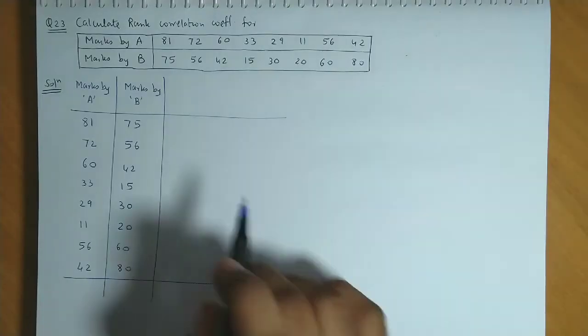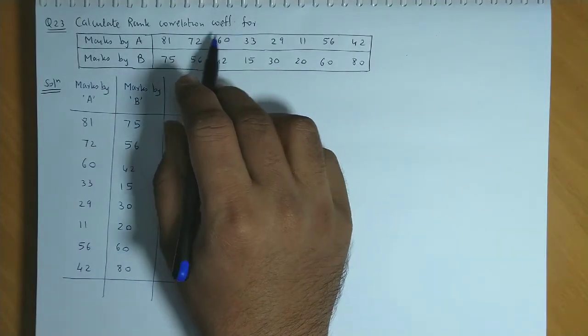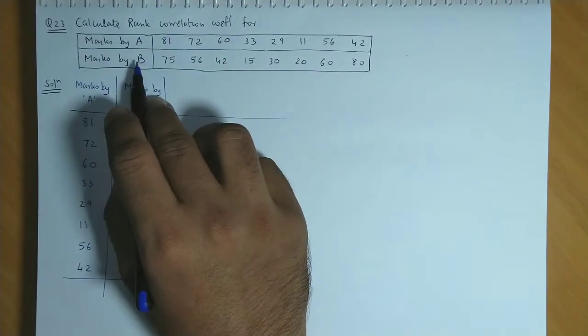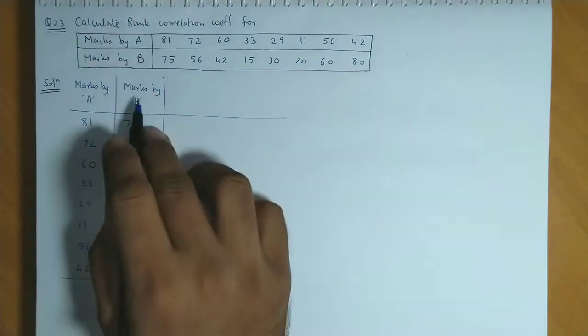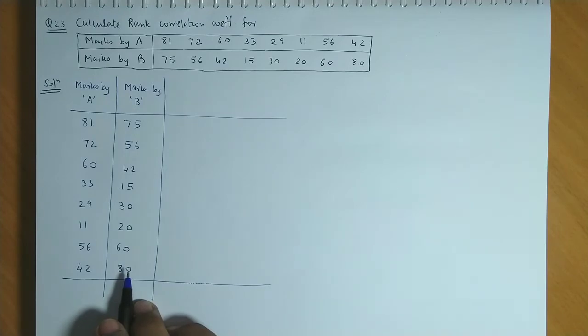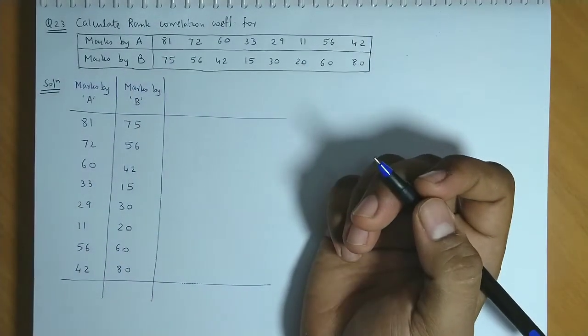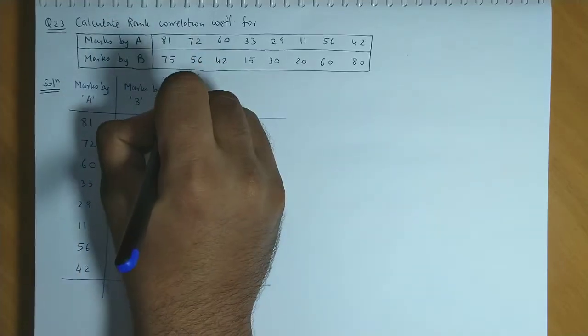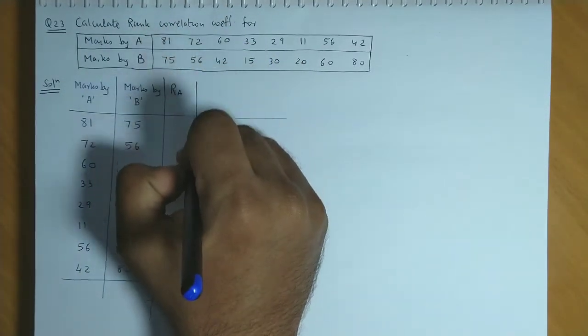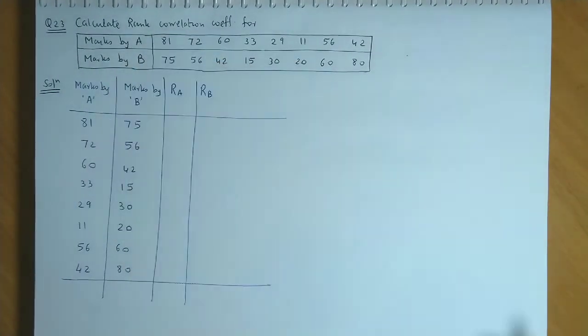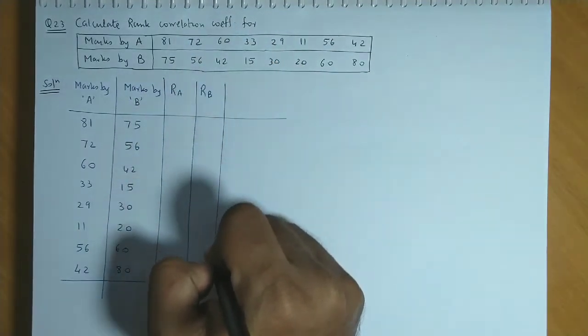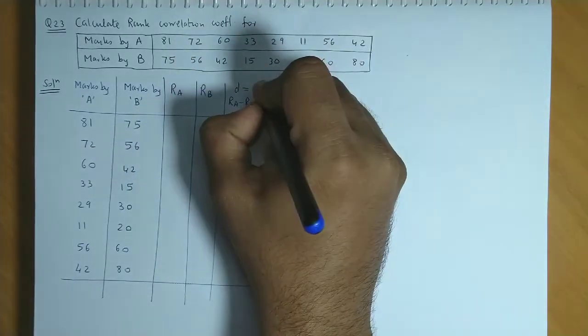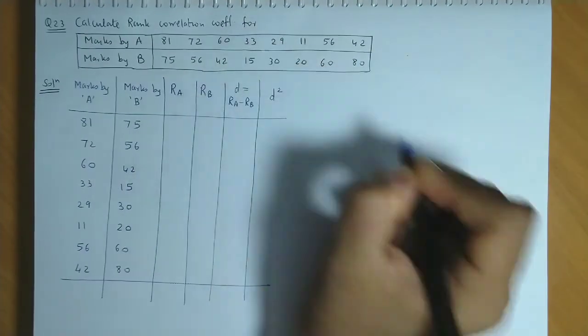Now let's take a question related to rank correlation coefficient. Here marks by A and marks by B are mentioned, but remember in the rank correlation we don't have the marks, we need the ranks. So these marks are given, we will find the corresponding ranks. First of all, the highest marks would be given the first rank, then 2nd rank, 3rd, 4th, and so on. First we have rank for A, next rank for B, then we will make difference between the ranks, that is RA minus RB, and last column, that is D square.